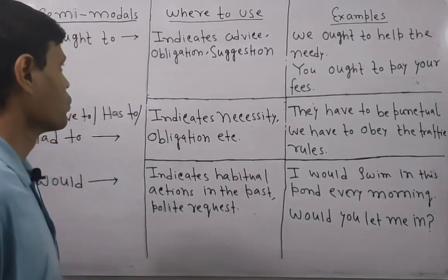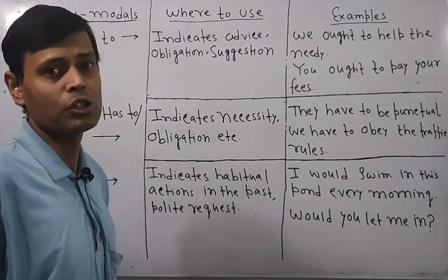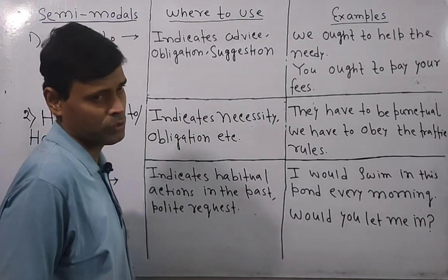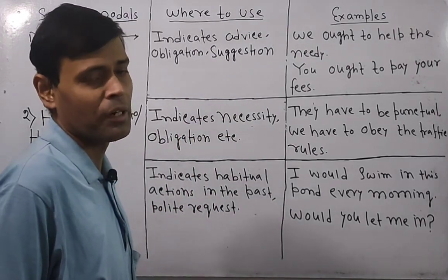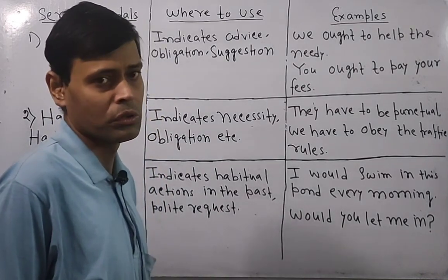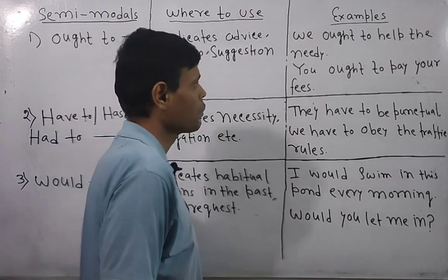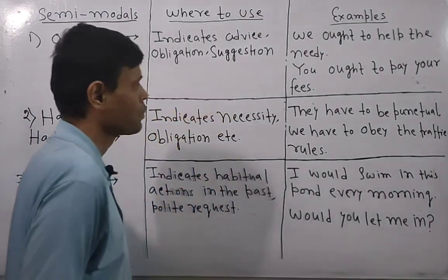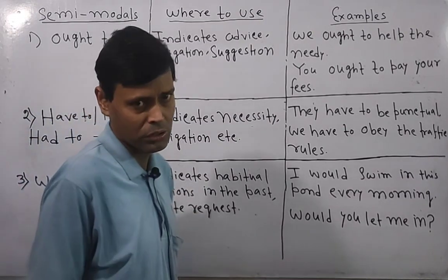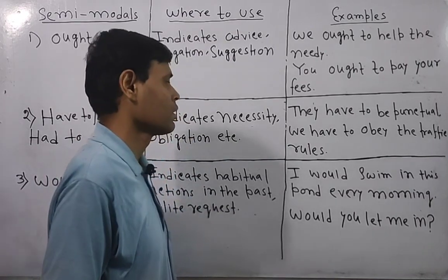The first semi-modal is 'ought to.' Where to use it: 'ought to' means 'should' and indicates advice, obligations, or suggestions. Whenever you want to express some kind of advice, obligation, or suggestion, you can use this semi-modal. For example: 'We ought to help the needy' — that means 'We should help the needy.'